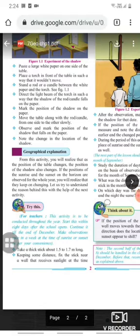Next is geographical explanation of the same. From this activity, you will realize that as the position of the table changes, the position of the shadow also changes. If the position of the sunrise and sunset on the horizon are observed for the whole year, you will realize that they keep on changing. Let us try to understand the reason behind this with the help of a next activity.